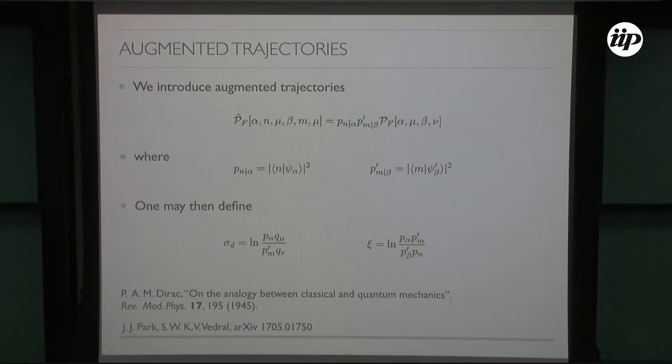I do that by introducing some conditional probabilities: p_n given alpha, which is the probability of finding the system in the energy basis given that it is psi_alpha, and similarly for the final states.